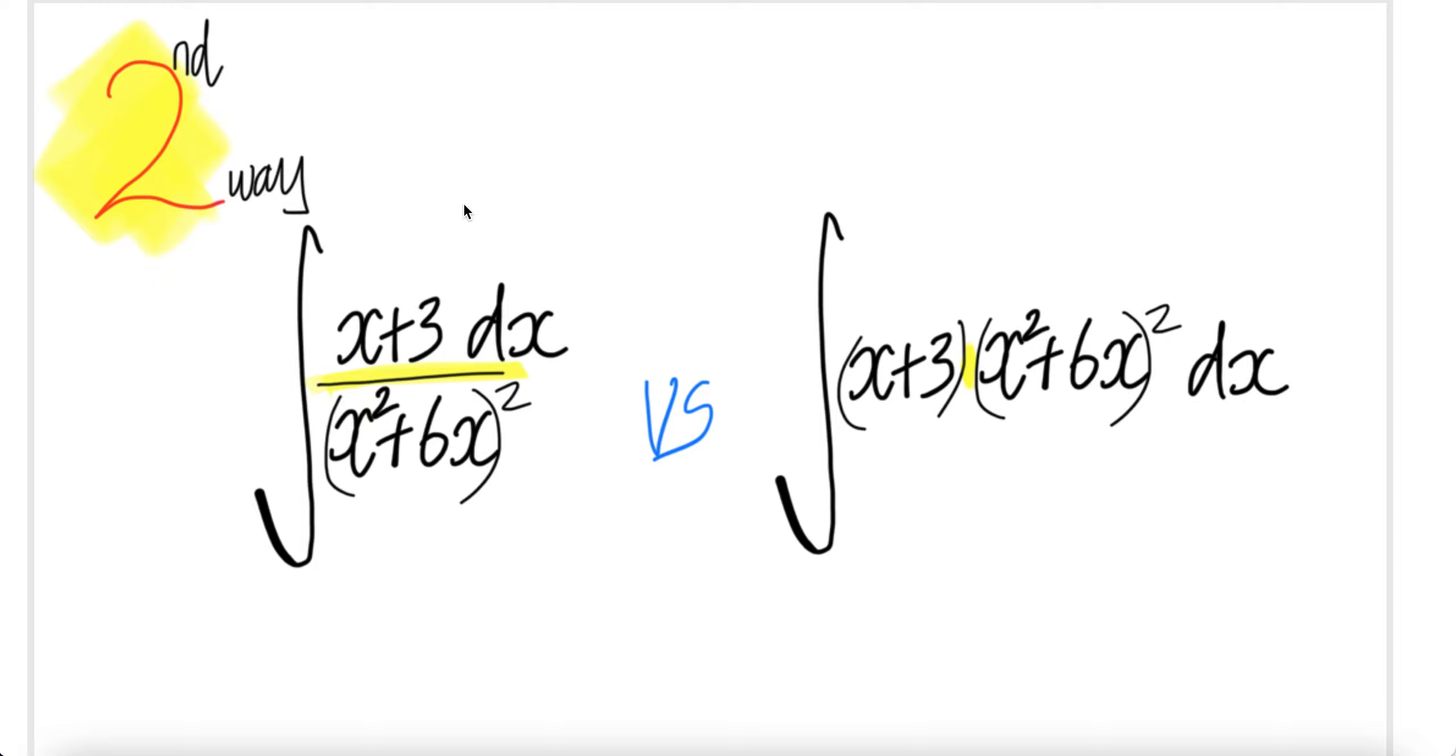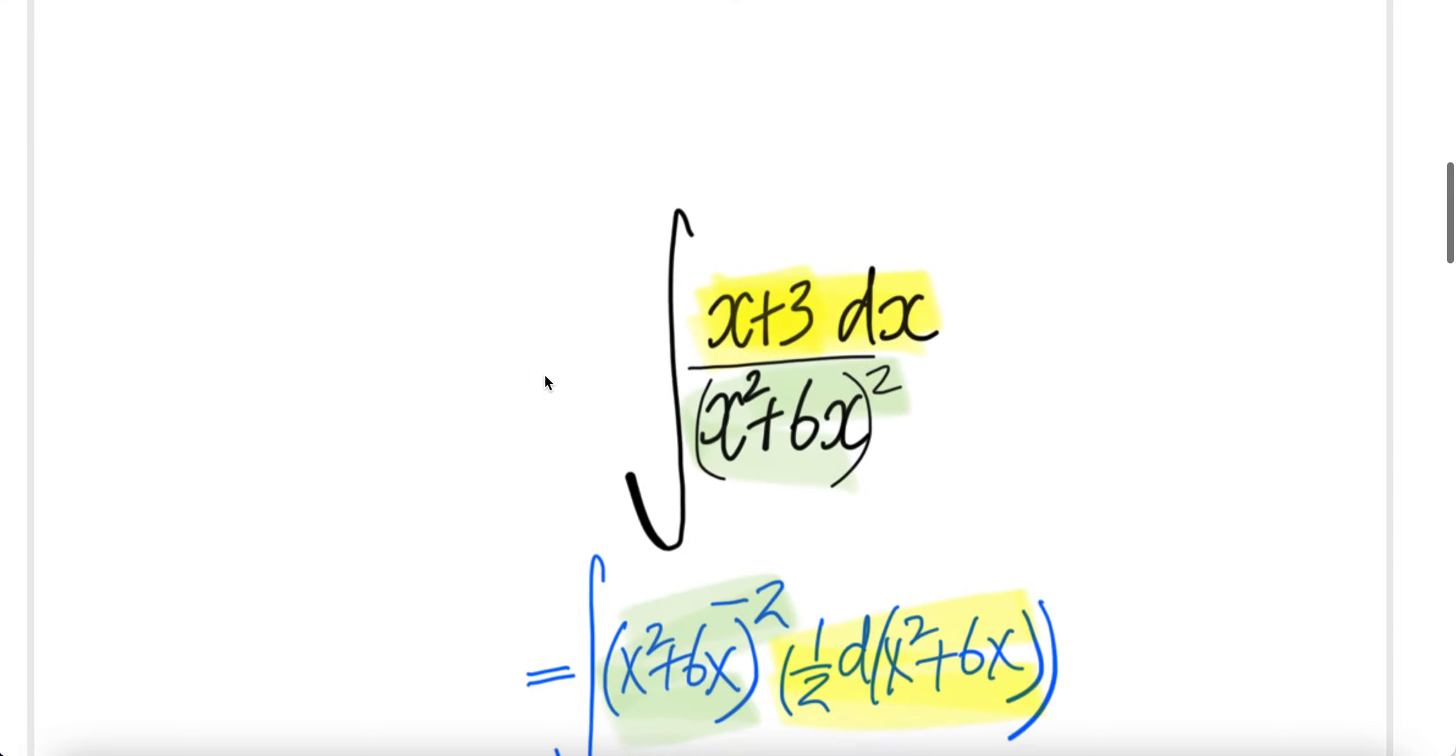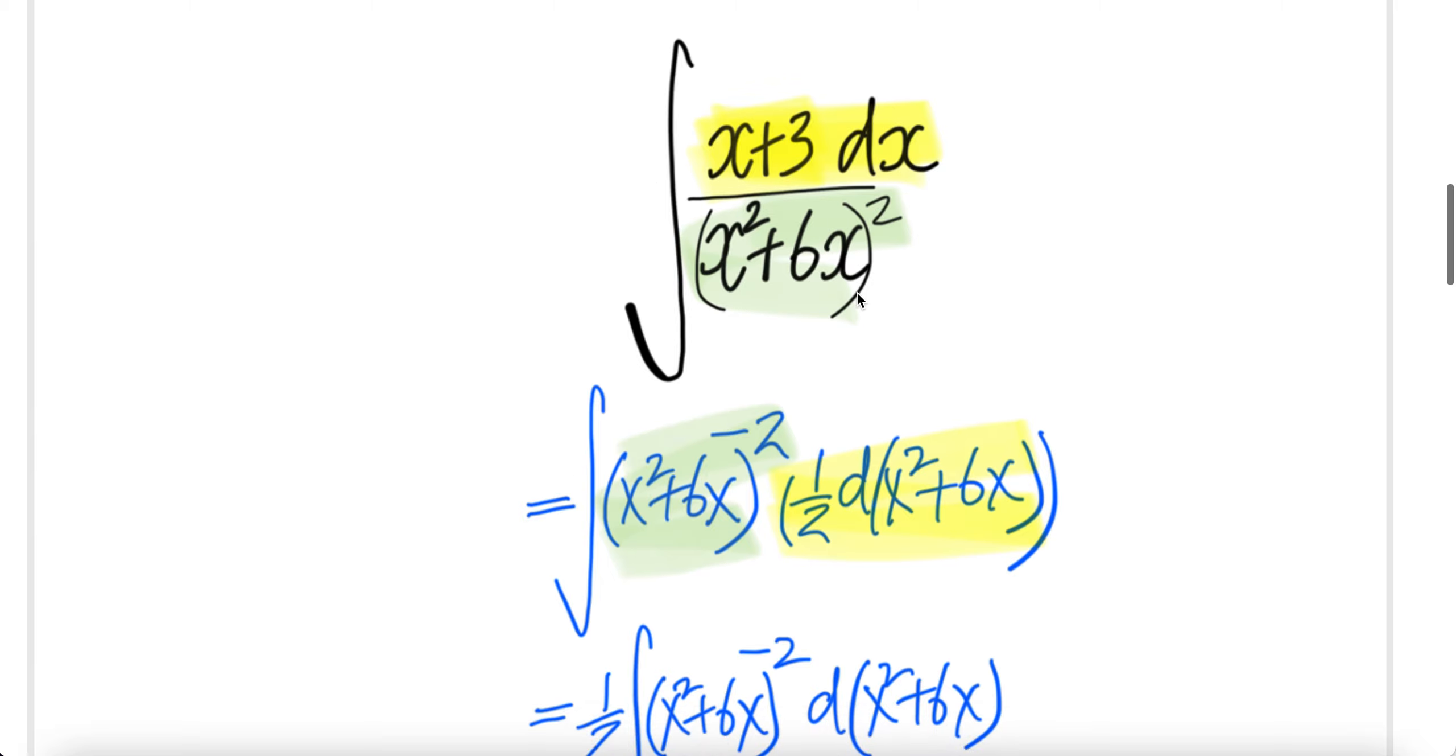So everything is the same. We are going to do this in the second way. Let's look at the first integral. We're going to write this yellowing thingy as derivative of x squared plus 6x. The derivative of x squared is 2x plus 6. Half of that will be x plus 3. So basically this is the same thing as that.